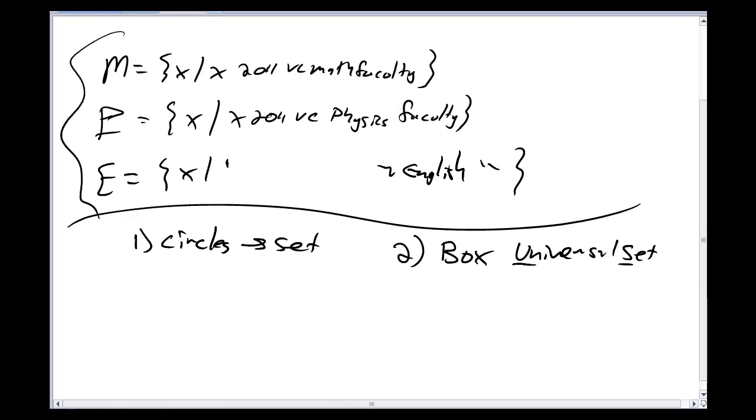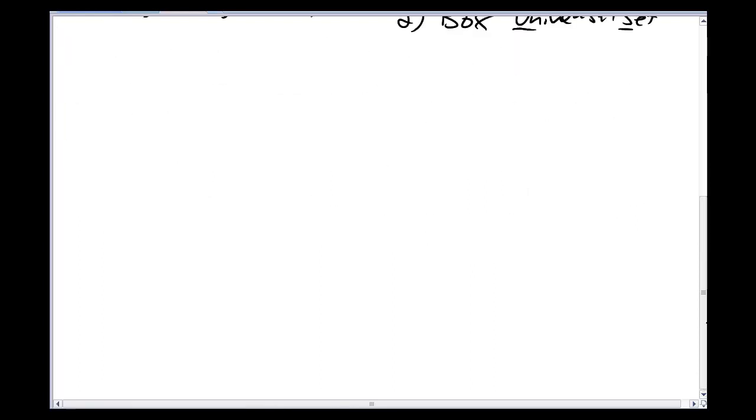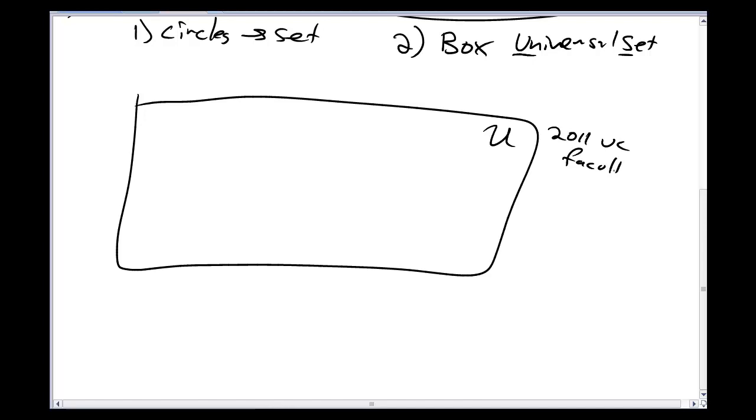So if I go up here and look at my three sets that I have, these are all talking about the 2011 VC faculty, which means for the sake of my Venn diagram that I want to create with this VC math faculty in it, the box I cook up that I call U, this set U is going to be all of the 2011 VC faculty. I don't have to include students, I don't have to include staff, I don't have to include people in California. I just need to include all of the 2011 VC faculty, anyone who's a faculty member here at the college then. Once I do that, then I can start drawing my circles.